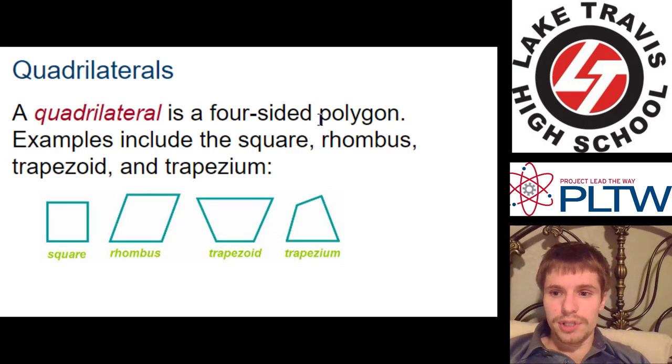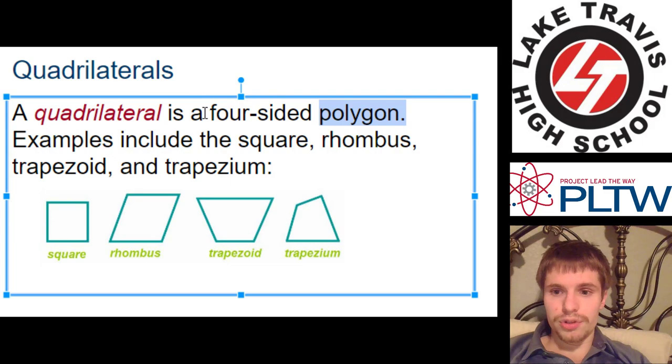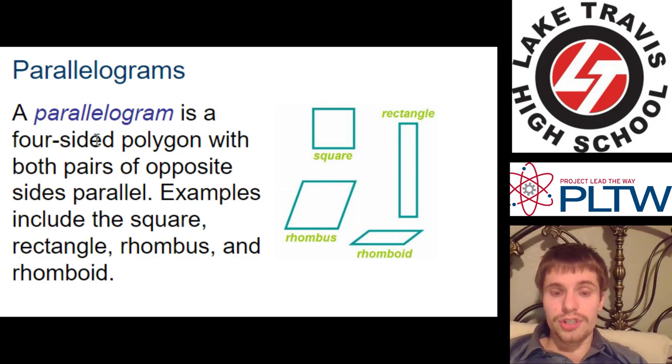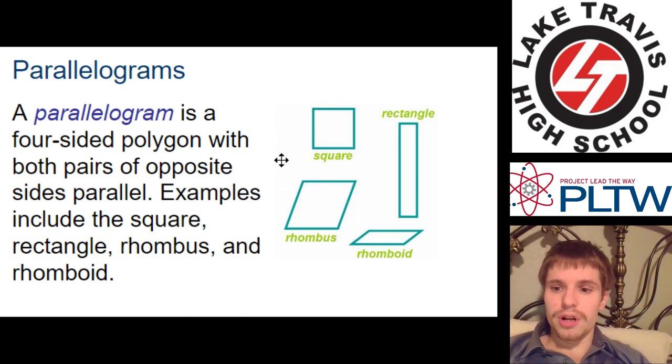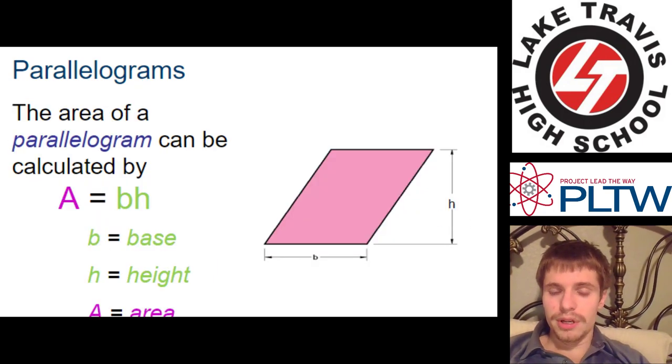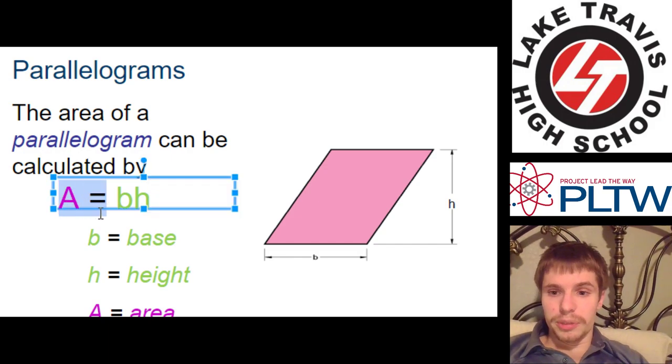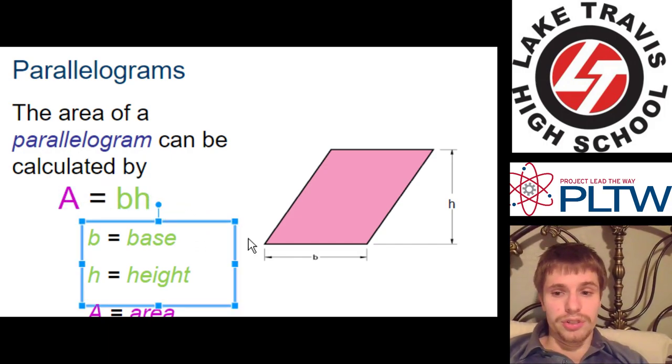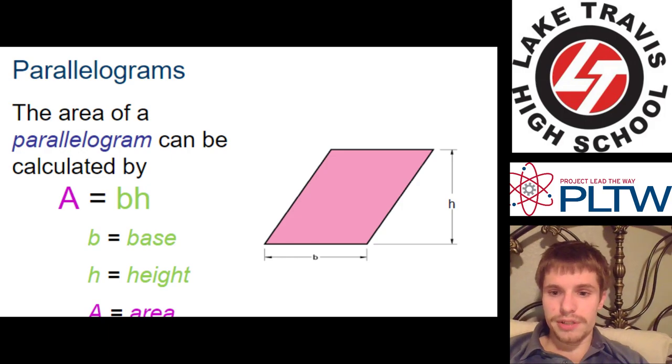Quadrilaterals are a subset of polygons. So we're getting more specific. All polygons that are four-sided. Parallelograms are a subset of quadrilaterals. All quadrilaterals that have opposite sides parallel for both sides. Rhombus, rhomboid, rectangle, square, etc. Parallelograms, if both sides of a quadrilateral are parallel to each other, have an area formula of this. Base times height. Which is exactly the same as a square or rectangle. So pretty easy there.